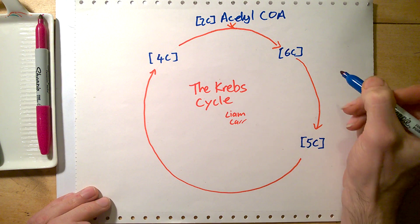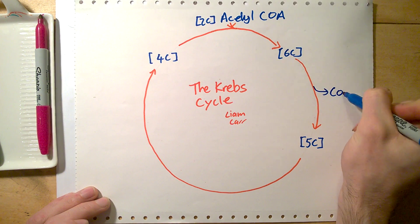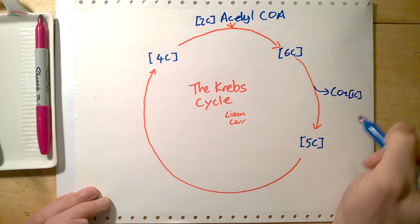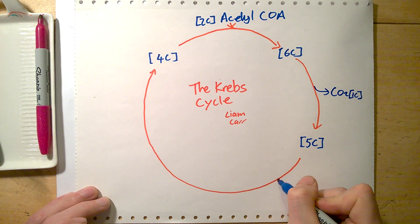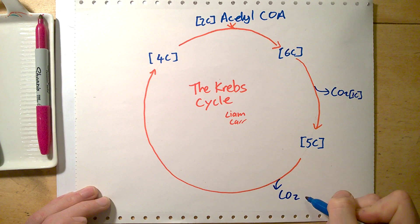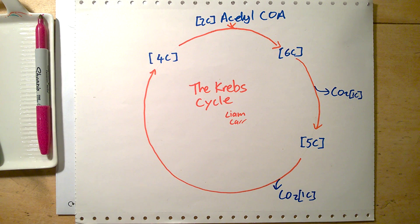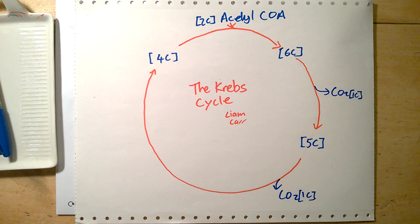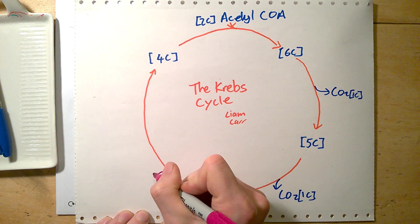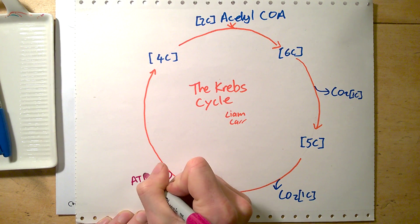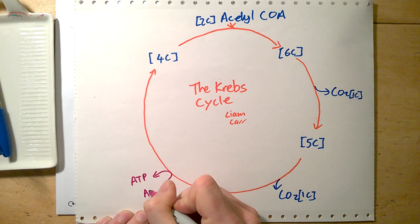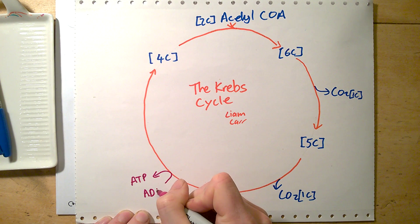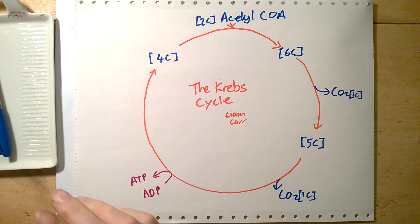At every stage when carbon is lost, you lose CO2, which is a one-carbon waste product. So it's quite elegant — all the carbons add up — but that is not the point of the Krebs cycle. We also get a little bit of ATP out of the Krebs cycle, but we get far more out of glycolysis and the electron transport chain which comes next. So ATP isn't the point of the Krebs cycle either.